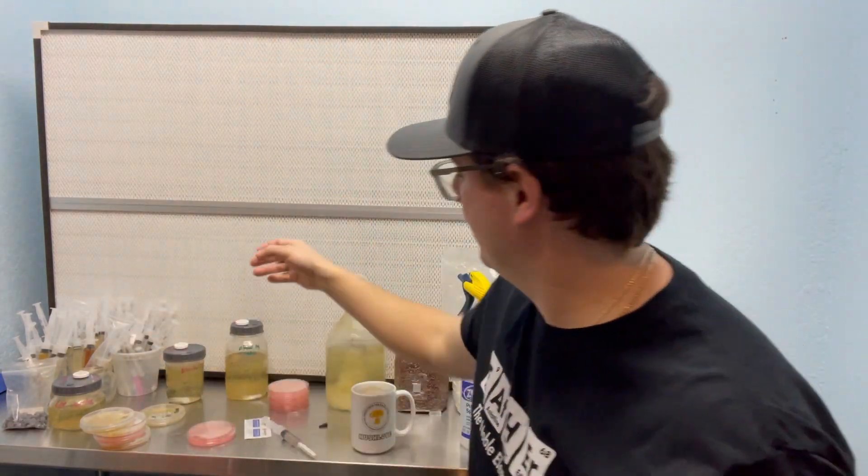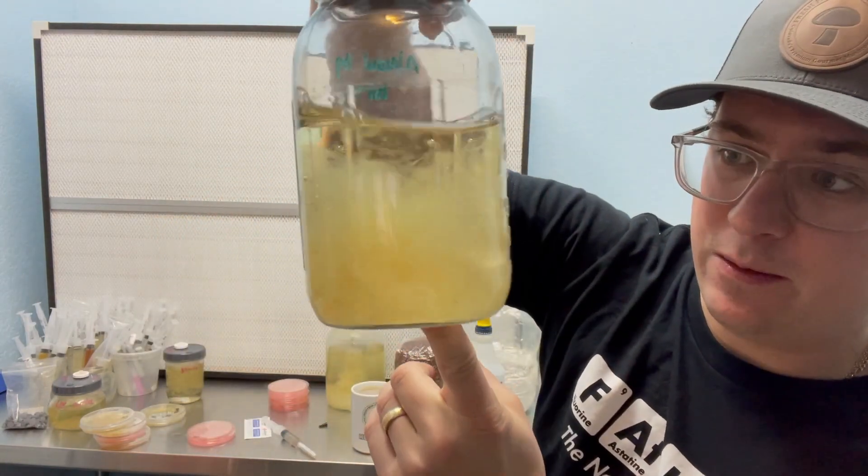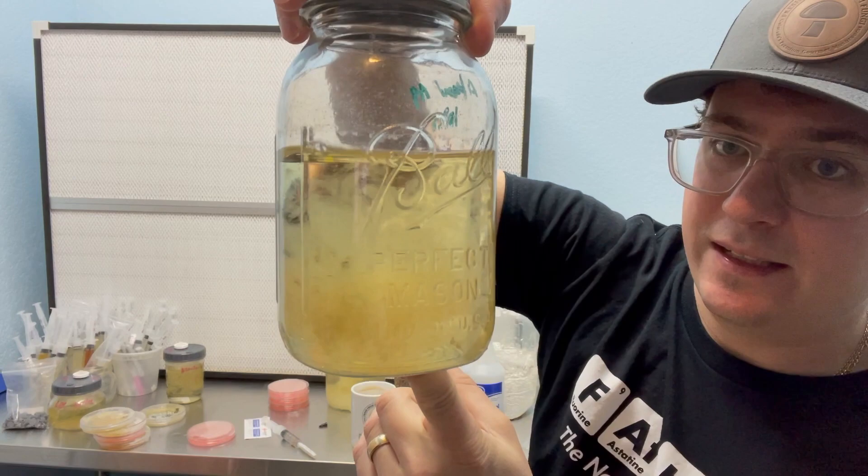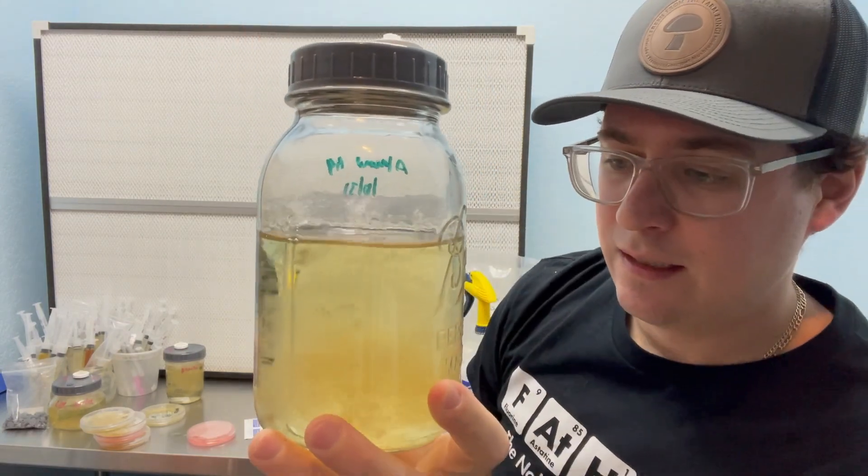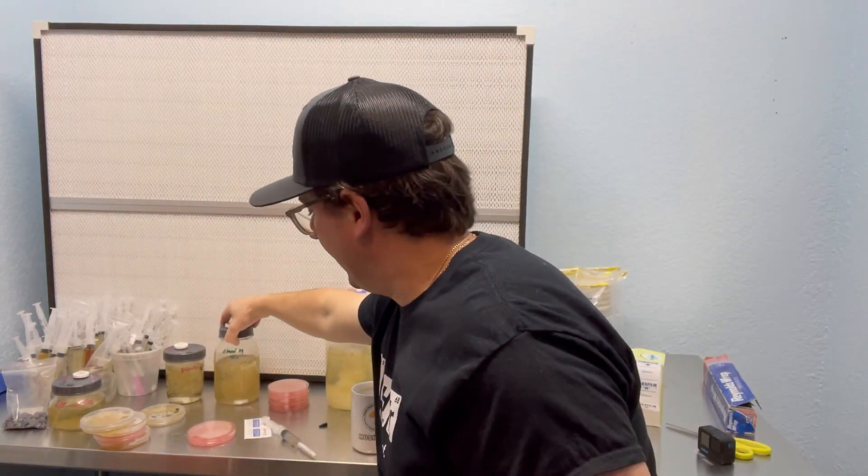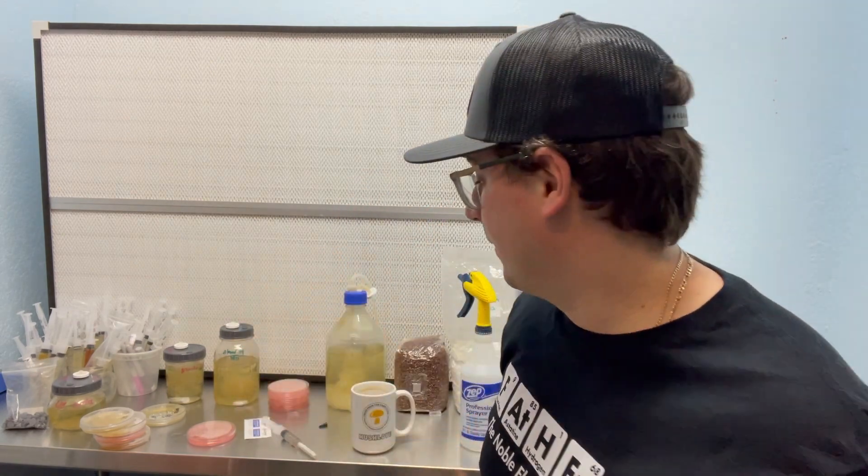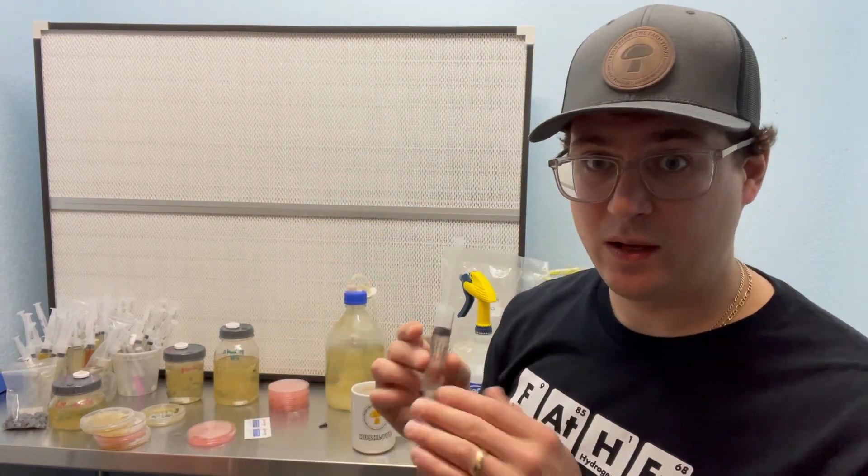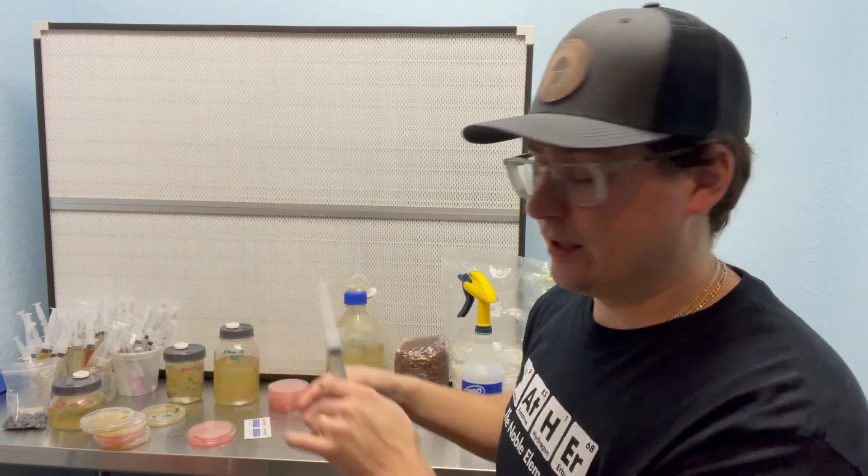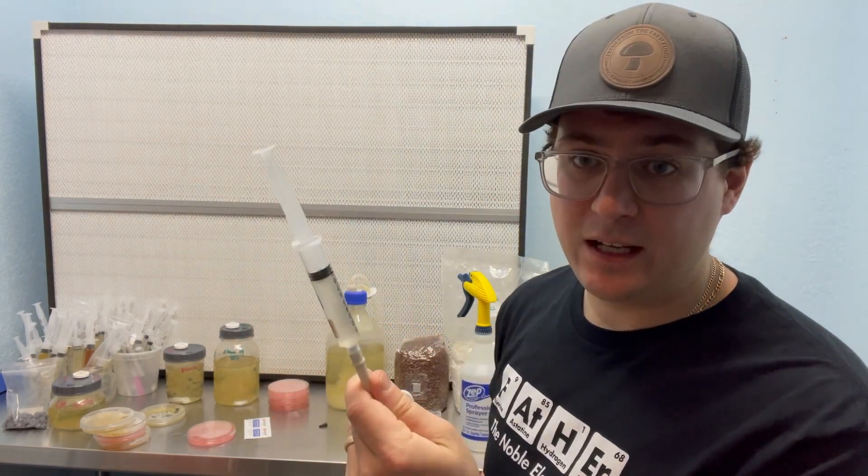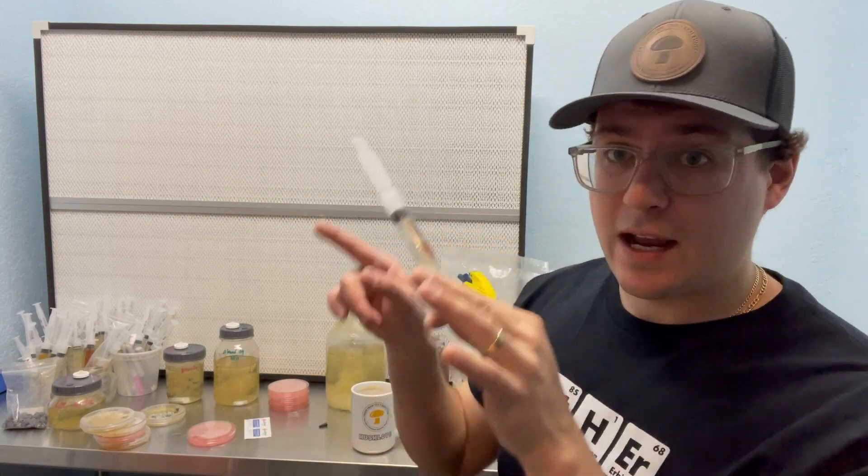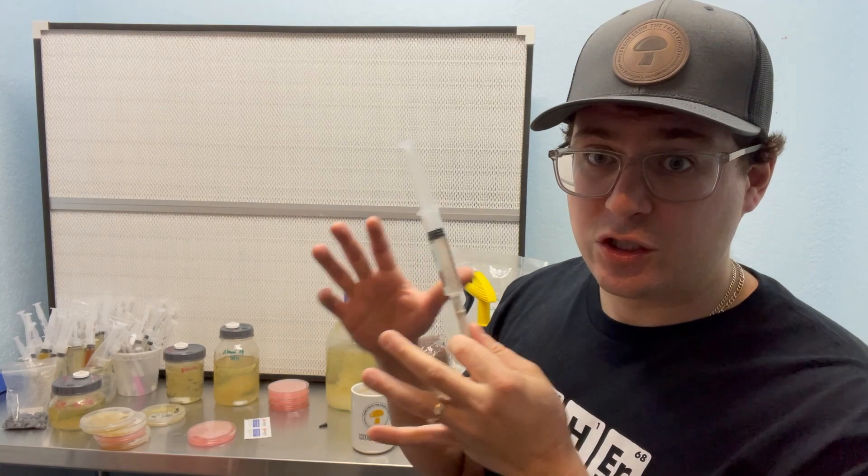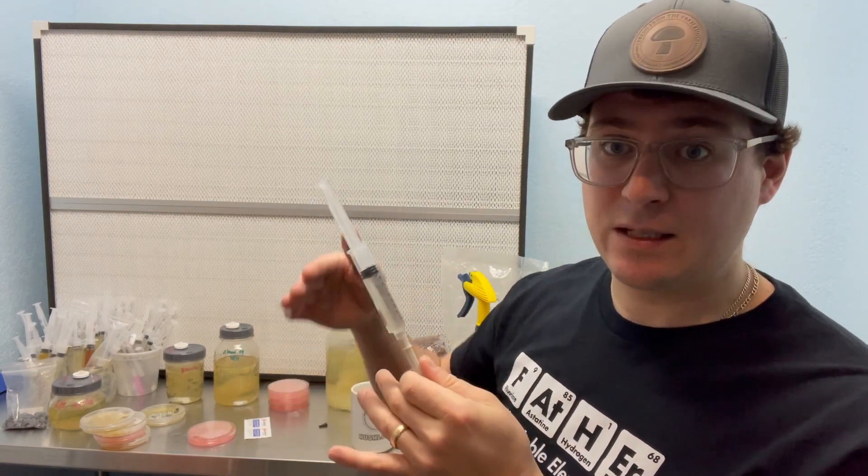But sometimes you can't tell if a liquid culture is contaminated. So this is an Agaricus species. It looks clean, but it's often a good idea to test on agar so you verify if it's clean or not, otherwise you're not going to know. So the next thing you can do with liquid culture after receiving it is to expand into a bigger liquid culture. If you haven't seen my video on how to make liquid cultures, go check that one out. But basically it's just a sugar water solution that has been sterilized.